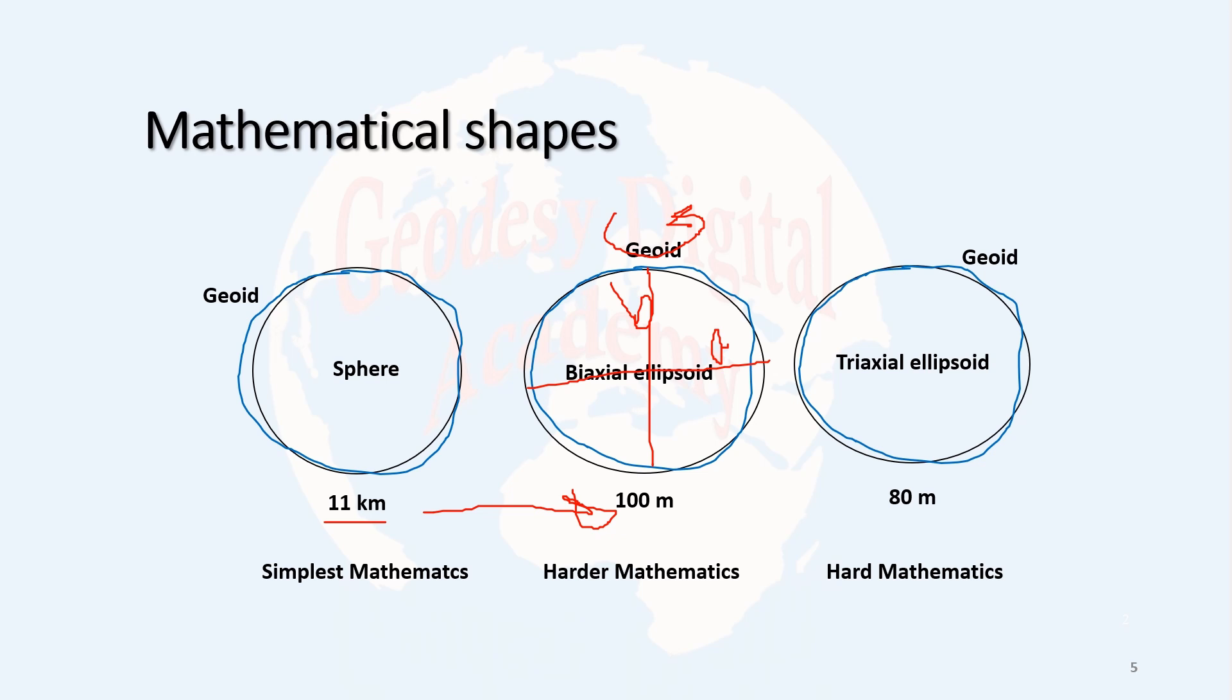After that, they tried to improve this approximation by considering a triaxial ellipsoid. In that case, they came to discrepancies up to 80 meters. So 20 meters improvement, but with what price? The price of very hard mathematics, very hard geometry. The triaxial ellipsoid has three axes: A, B, and C. The mathematical model for triaxial ellipsoid is much more complicated than the biaxial ellipsoid. Therefore, it is more logical to select the biaxial ellipsoid as the mathematical shape of the Earth.